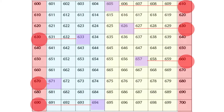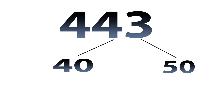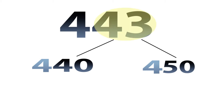Let's try to do some rounding with larger numbers without using our chart. Let's look at four hundred forty-three. We need to determine what two multiples of ten four hundred forty-three is between. We know that forty-three is between forty and fifty, but we're talking about numbers between four hundred and five hundred, so the hundreds place will stay the same. Four hundred forty-three is closer to four hundred forty than four hundred fifty. So, four hundred forty-three rounded to the nearest ten is four hundred forty.